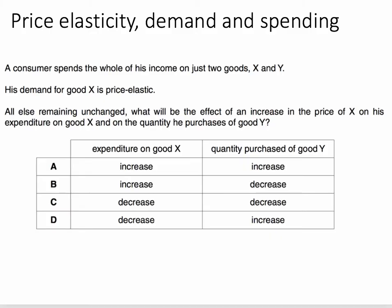A consumer spends the whole of his income on just two goods, Good X and Good Y. And we're told — and this is important — that demand for Good X is price elastic; it's responsive to a change in price. Everything else remaining the same. What will be the effect of an increase in the price of X on this consumer's spending on Good X, total spending, and on the quantity he buys of Good Y?